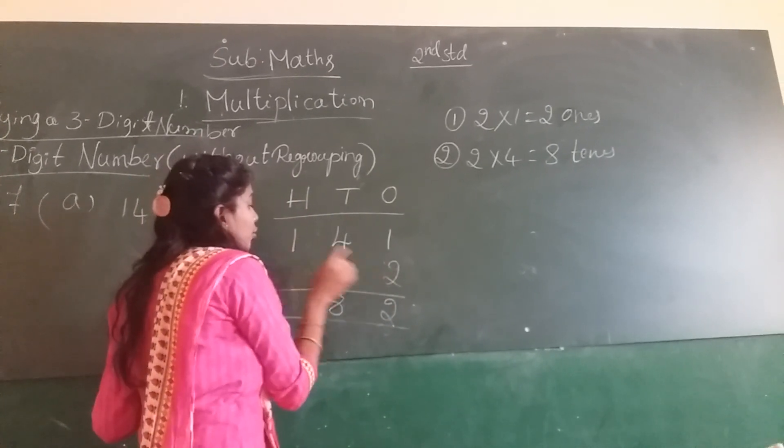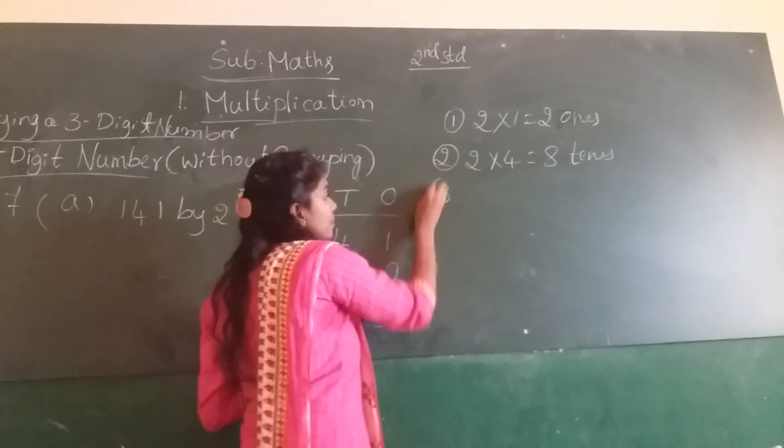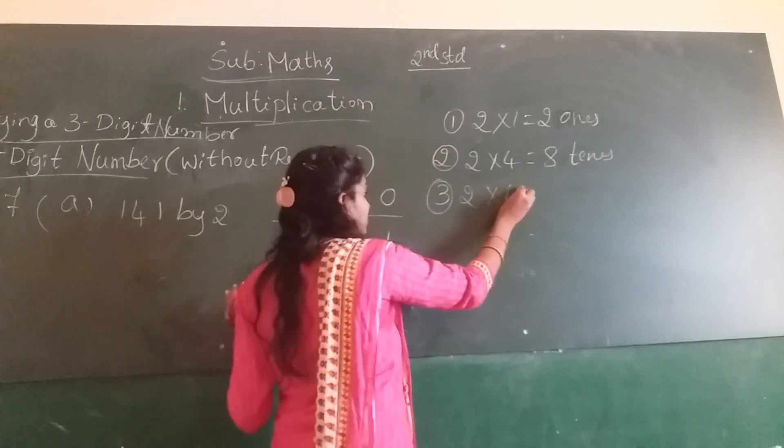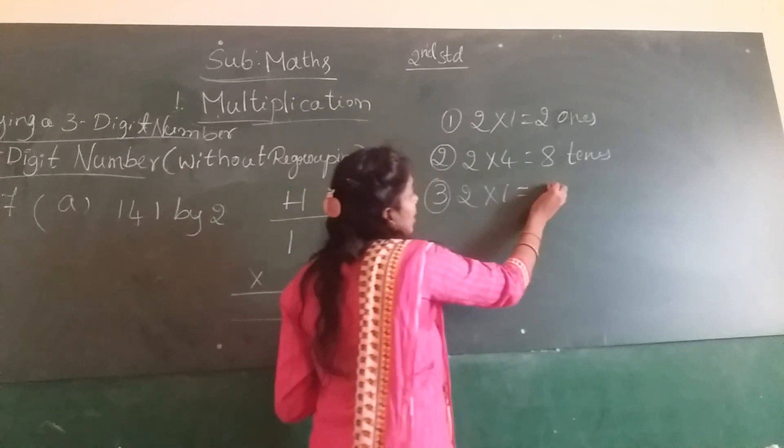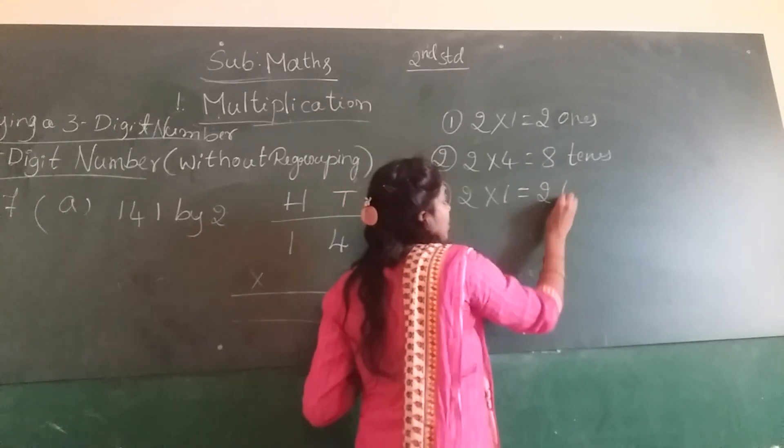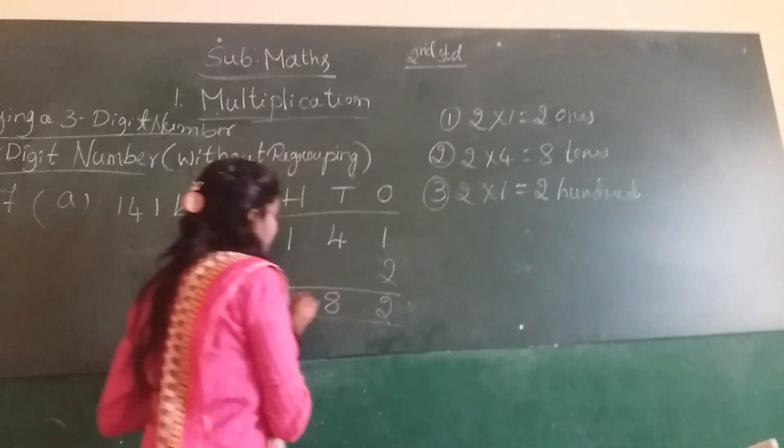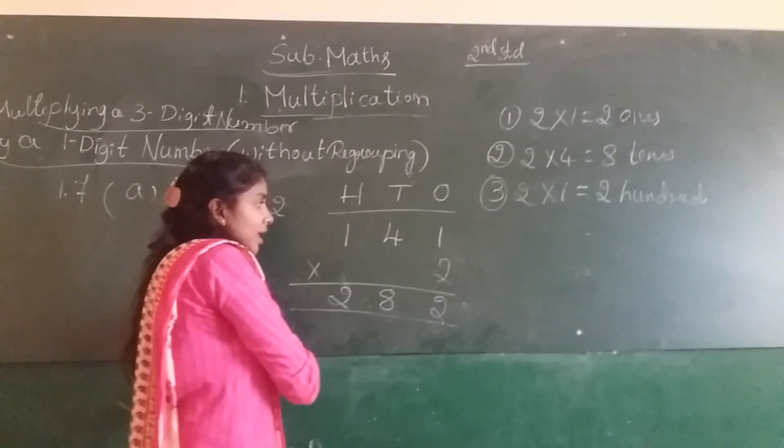Next, hundreds column. 2 into 1, first step 2 into 1, 2 ones are 2. Again, 2 hundreds. This is the hundreds. So write in the hundreds place.